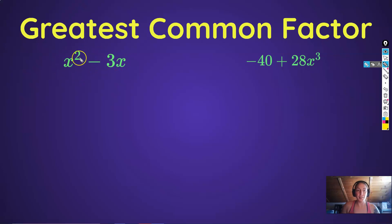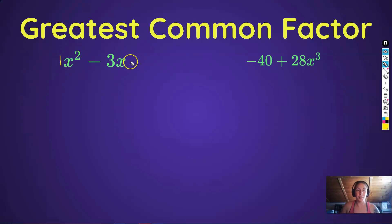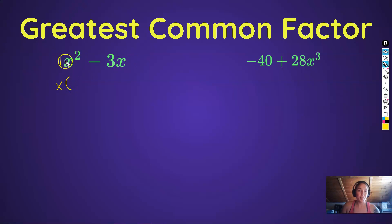In this first example, coefficient one and coefficient three — the greatest common factor is one, so nothing too interesting there. But for the x's: I have x squared here and x to the first here. The greatest amount of x's I can take out is one, because they both have at most one x in common. If I take one x out of x squared, I'm left with x. If I take one x out of negative 3x, I'm left with negative 3. So this factors to x times (x minus 3).